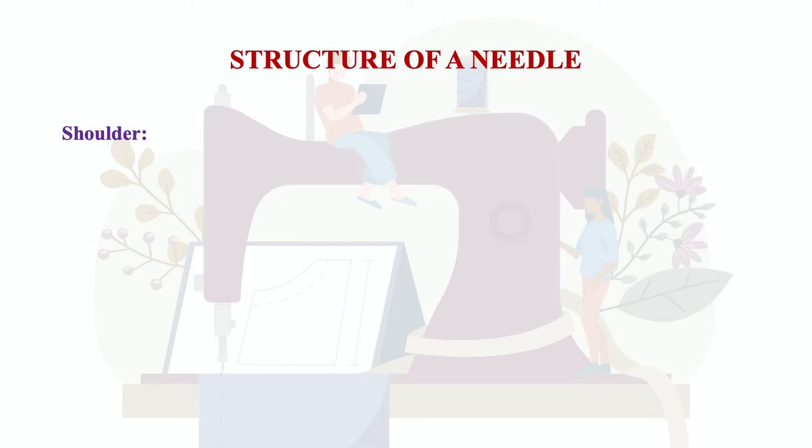The third part is the shoulder — the section between the shank and the blade. This is the part where the needle tapers down into the blade. So we have the butt at the top, then the shank that fits into the machine, and then the shoulder which connects into the blade.